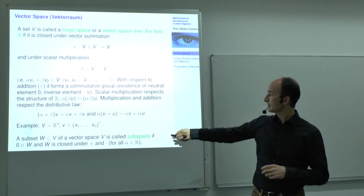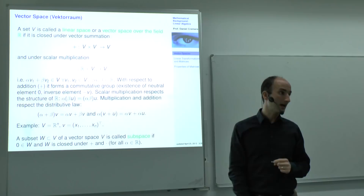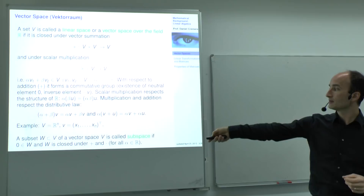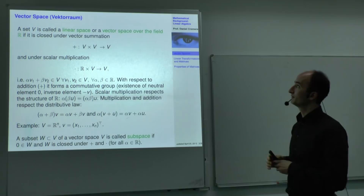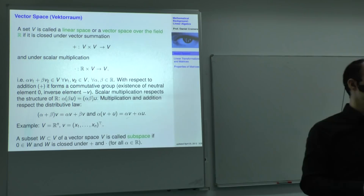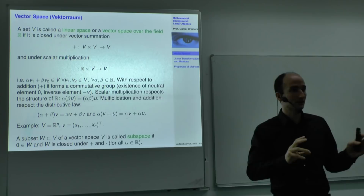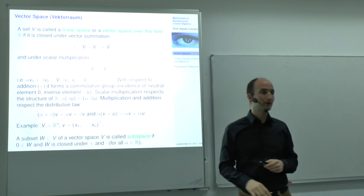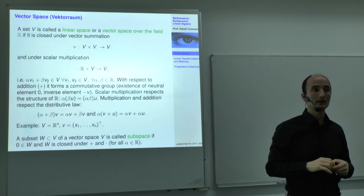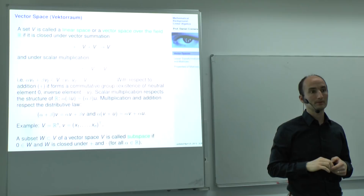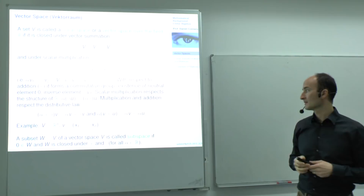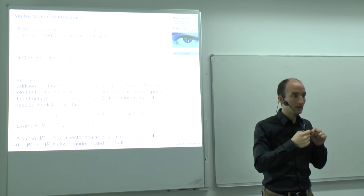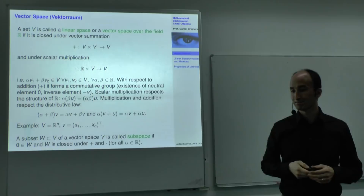In addition to a vector space, you can define a so-called subspace — a subset of these vectors. What's critical is that the subspace has to be a vector space as well. In particular, the zero element has to be in that subset, and it has to be closed: if I do summation in the subspace I have to remain in the subspace. A useful example: for a vector space like R3, any plane that goes through the origin is a subspace. If it doesn't go through the origin, it's not a subspace, because then you have no zero element.